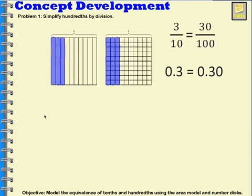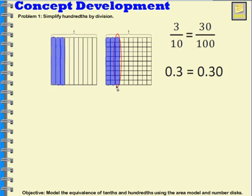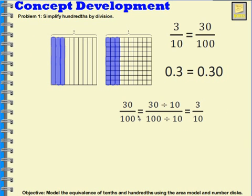Now let's show this with the same division we used with one tenth. We're taking these columns of ten and putting them together — that's what we're doing with our division. So I'm taking thirty hundredths and saying it's equal to thirty hundredths divided by ten tenths, which is equal to three tenths. Because thirty divided by ten is three, and a hundred divided by ten is ten.